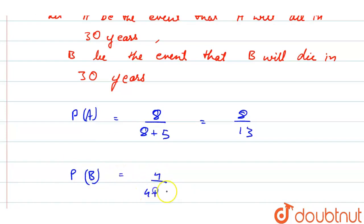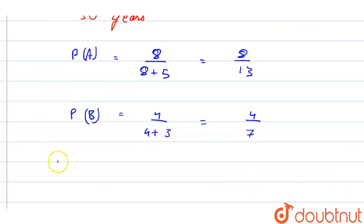The probability of A dash will be P(A') = 5 by 13, because 1 minus 8 by 13 equals 5 by 13.